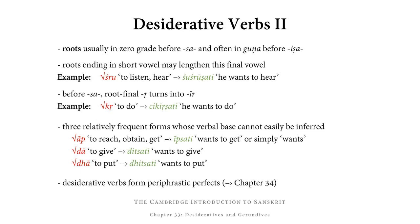Then there are three desideratives whose verbal basis cannot easily be inferred at all, and so they are given here explicitly. These are āp (to reach, to obtain, to get), which has the desiderative ipsati, meaning either he wants to get or simply wants. Then from dā (to give), we get the desiderative ditsati, he wants to give. And from dhā (to put), we get the desiderative ditsati, he wants to put. Finally, desiderative verbs form periphrastic perfects, something that's going to be introduced next chapter.